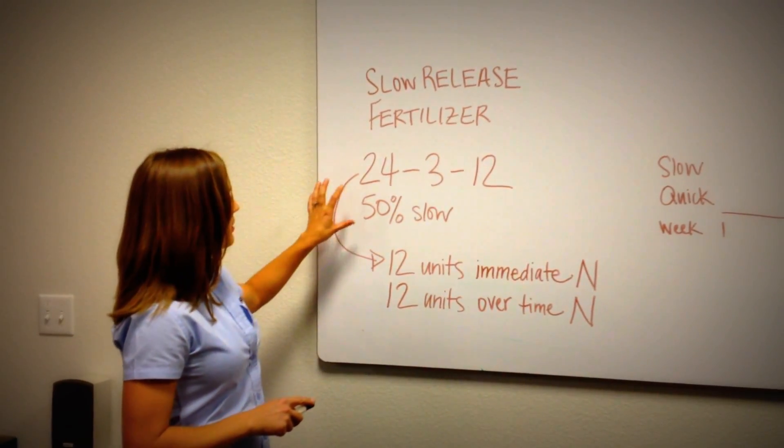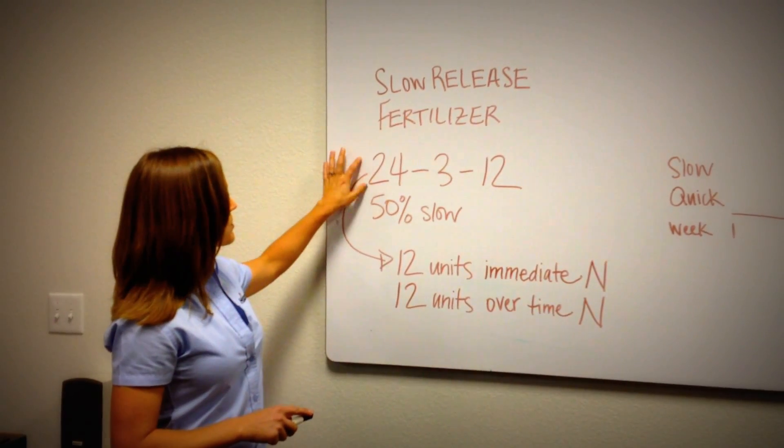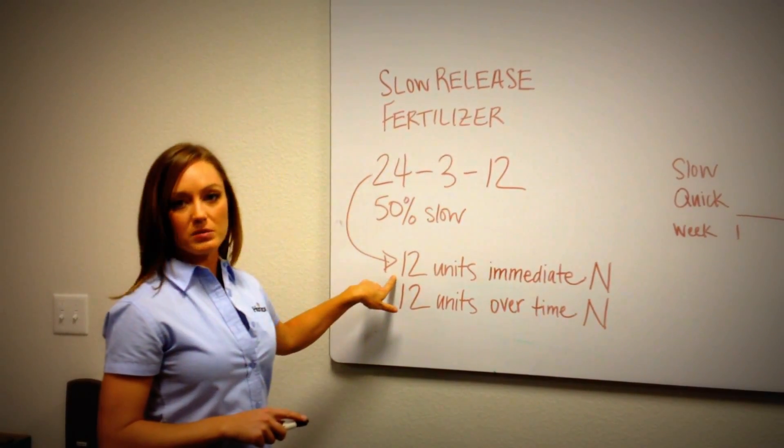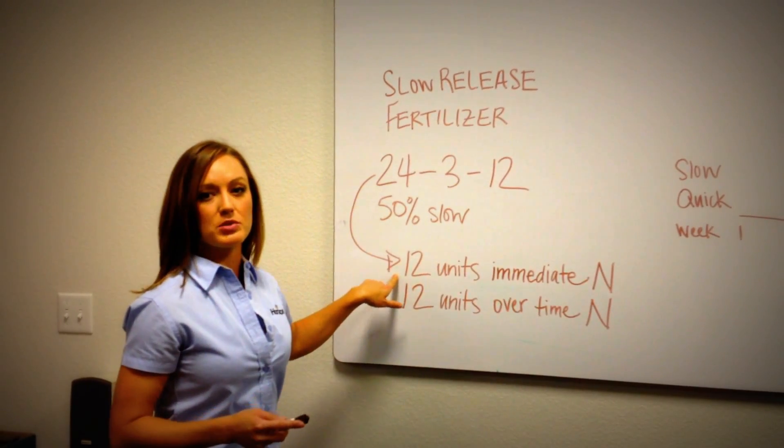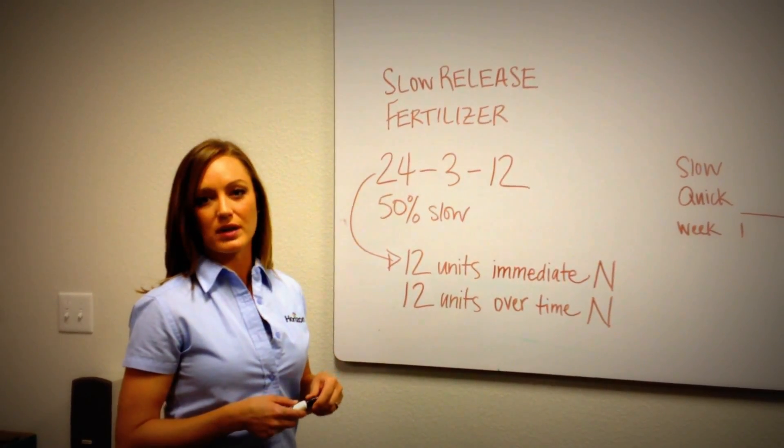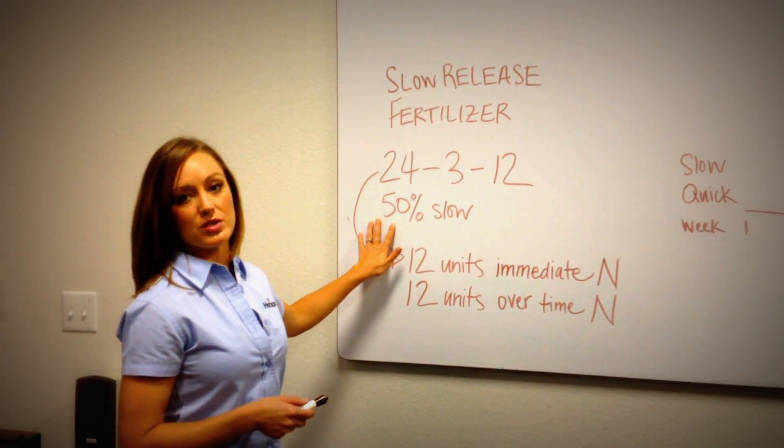So you might see on a bag, for example, a 24-3-12. So of those 24 units of nitrogen, 12 of them are still immediately available. So there's a misconception that slow release means you're going to have to wait a long time to see a result, and that's certainly not true, particularly if it's only a percentage that is slow.